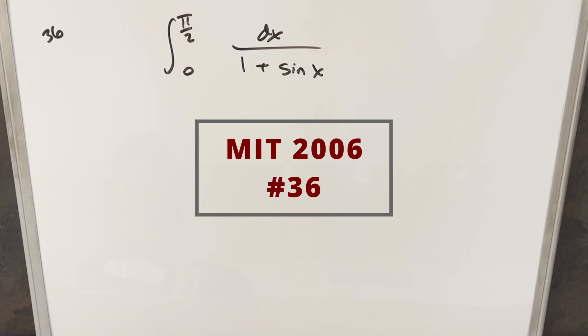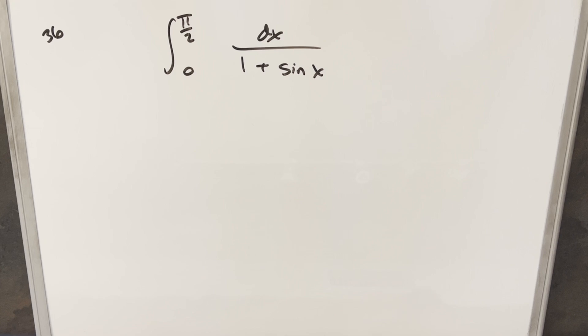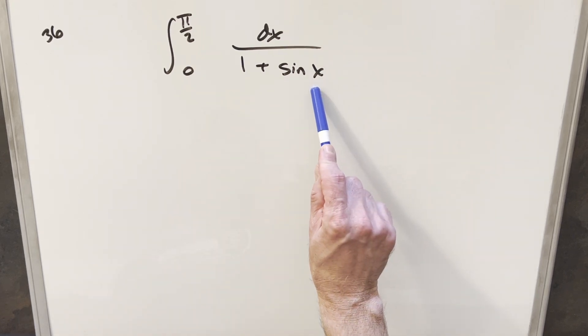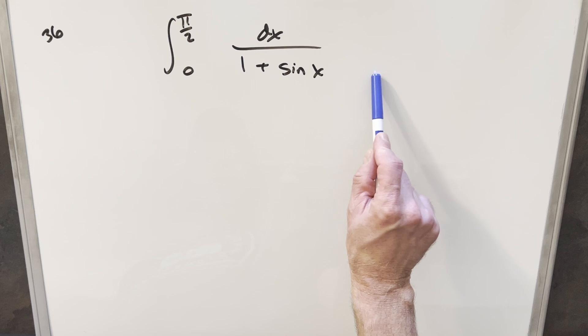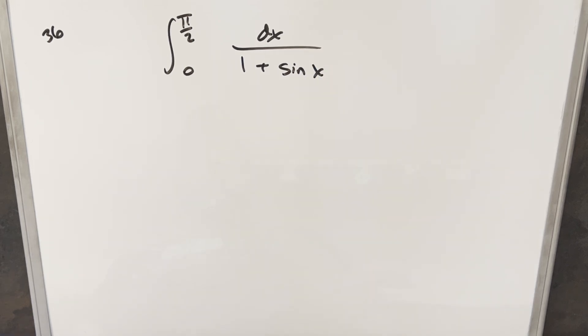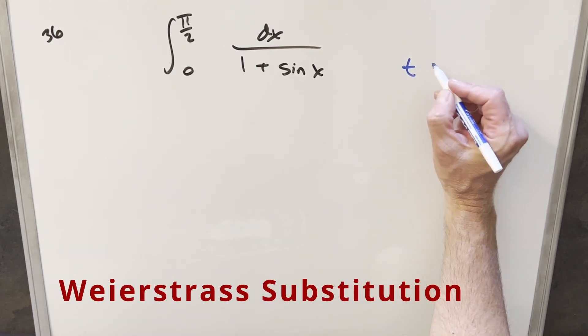Okay, we have here to take another integral from the MIT integration bee from 2006. This was problem number 36. We have the integral of 0 to π/2 of 1 over 1 plus sin x dx. Okay, now there is a pretty quick way to do this. What I did originally on this was just multiplied by the conjugate, multiplying by 1 minus sin x in the numerator and denominator. That's going to simplify pretty nicely. But today what I'm trying to do instead is look for a longer method. I'm going to work on this using the Weierstrass substitution.